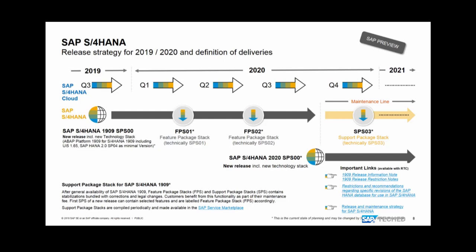On the slide you'll see important links: the release information notes for 1909 and the release restriction note, which is the entry point for technical dependencies and limitations you need to know when starting with that release — whether it's a new installation, upgrade, or system conversion. There's also a link to HANA database restrictions and recommendations, and a link to the release and maintenance strategy paper from SAP.